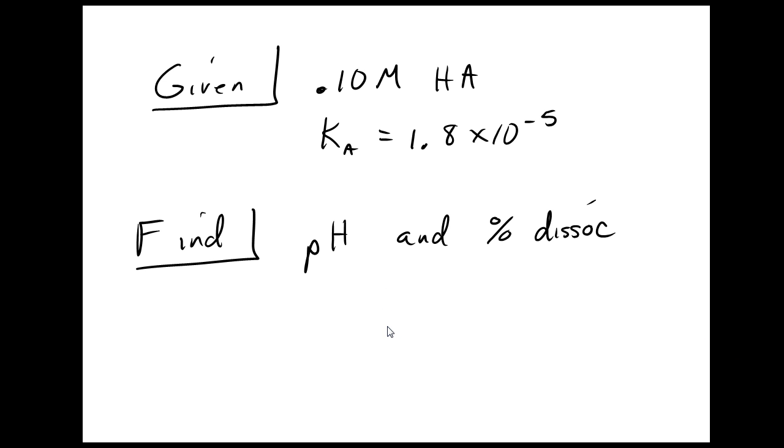So, let's just try a problem that uses this. Given 0.10 molar HA, with a Ka of 1.8 times 10 to the negative 5th, find the pH and the percent dissociation.